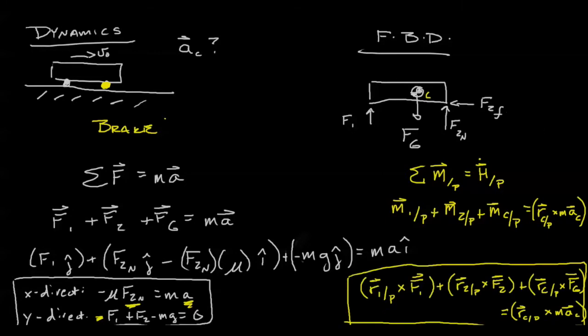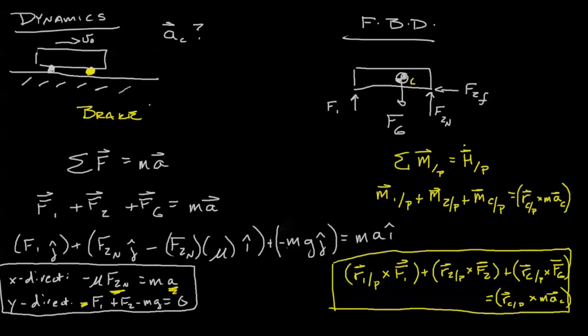And here we have our equation that takes into account angular momentum. We can see that positions from one to P, whatever point it is, we can figure those out, all the positions we can find are just functions of our geometry, which leaves us with force one, force two, and the acceleration.